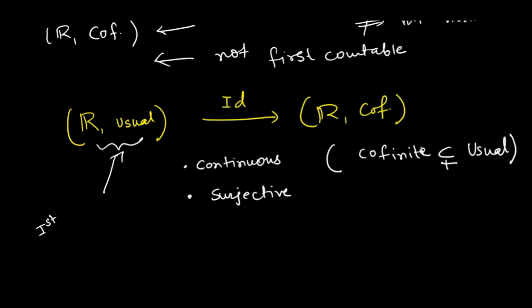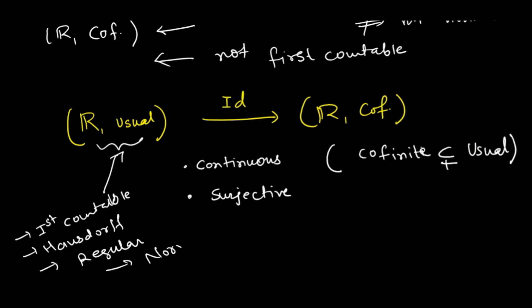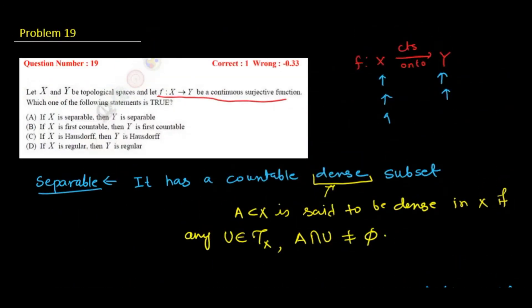This identity map is continuous because the co-finite topology is smaller than the usual topology, and it is surjective. R with the usual topology is first countable, regular, and normal, but R with the co-finite topology is neither first countable nor Hausdorff nor regular nor normal. So all three properties — first countable, Hausdorff, and regular — are not preserved. Only option A is correct.